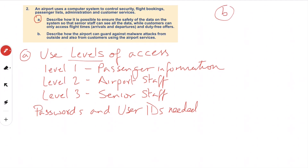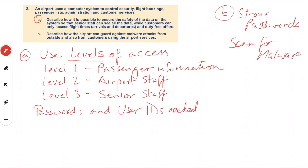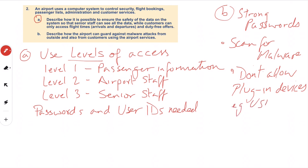Part B: describe how the airport can guard against malware attacks from outside and from customers using the airport services. We need strong passwords for these user IDs, as mentioned in part A. We'll also need to look at scanning for malware — anything that may have been downloaded. To prevent this, we don't allow plug-in devices such as USB memory sticks or flash drives to be connected to the computers in the airport.